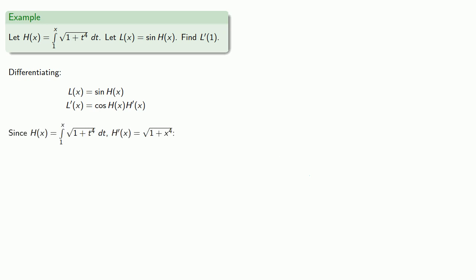And so we can substitute these values into our expression for l prime of x. And again, since h of x is the integral from 1 to x, then h of 1 is going to be 0. And that allows us to find l prime of 1.